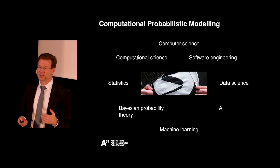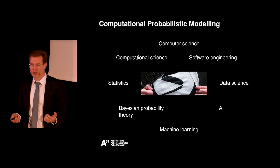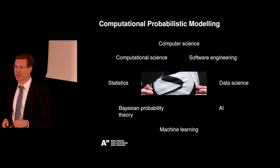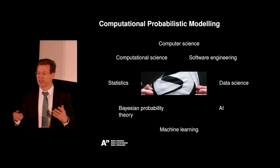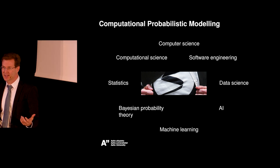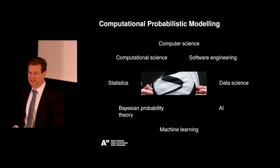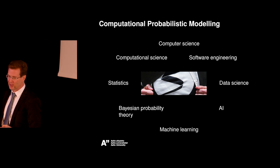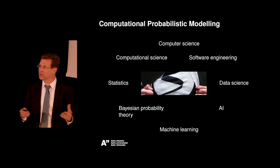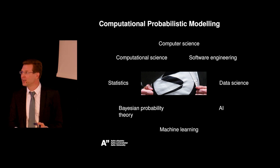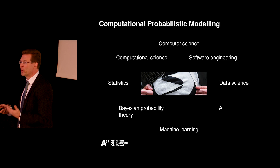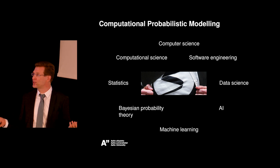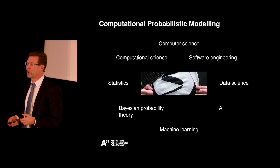Here you can see the different topics I need to understand to work on these. I'm in a computer science department, and my statistics colleagues say I clearly think like a computer scientist. Computational science combines computer science and math. I use a lot of statistics and publish in statistics forums. Bayesian probability theory combines data and mathematical models. I use ideas from machine learning, publish in machine learning forums, and I'm part of the Finnish Center for Artificial Intelligence. Probabilistic approaches are the future of AI. These tools are used in data science, and I need to understand software engineering when implementing them.